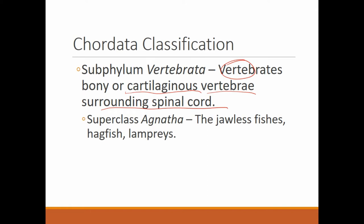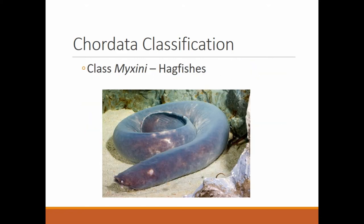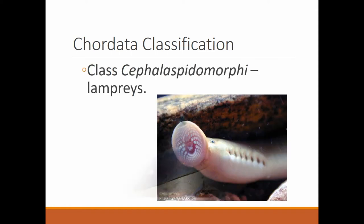The first group in subphylum Vertebrata is superclass Agnatha — these are the jawless fish, which as their name suggests have no jaw. This is a hagfish in class Myxiniae — it doesn't have a jaw; everyone would think it's an eel but it's actually not. And this creature is in class Cephalaspidomorphi, which is quite the mouthful — this is the lamprey. As you can see, they don't have a jaw; they just have this large oral sucker.